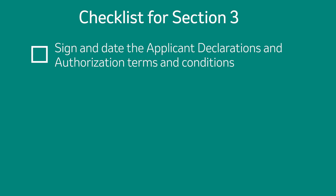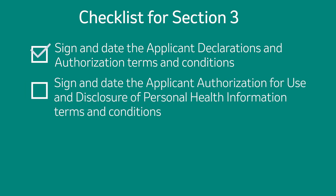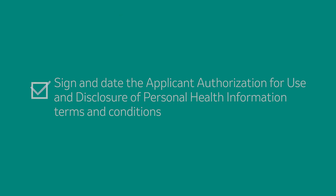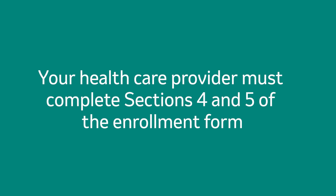Here is a checklist for Section 3. Did you sign and date the application declarations and authorization terms and conditions? Did you sign and date the applicant authorization for use and disclosure of personal health information terms and conditions? As a reminder, Sections 4 and 5 of the enrollment form need to be completed by your health care provider. If any information is missing, this will delay our ability to get your medications to you.